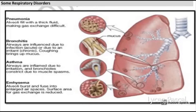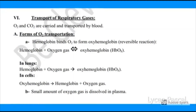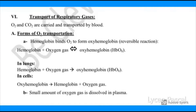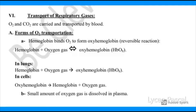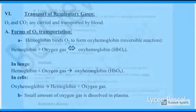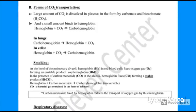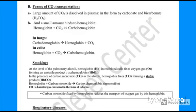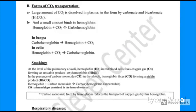Some respiratory disorders include pneumonia, bronchitis, asthma, and emphysema. Oxygen and carbon dioxide are carried and transported by blood. When hemoglobin binds to oxygen it forms oxyhemoglobin — a reversible reaction. In the lungs: hemoglobin + oxygen → oxyhemoglobin. In the cells: oxyhemoglobin breaks down into hemoglobin and oxygen gas. A small amount of oxygen is dissolved in plasma. A large amount of carbon dioxide is dissolved in plasma as carbonate and bicarbonate, and a small amount binds to hemoglobin to form carbohemoglobin. That is why hemoglobin has a higher affinity for oxygen. In the lungs, carbohemoglobin breaks down into hemoglobin and carbon dioxide; in the cells, hemoglobin plus carbon dioxide forms carbohemoglobin.